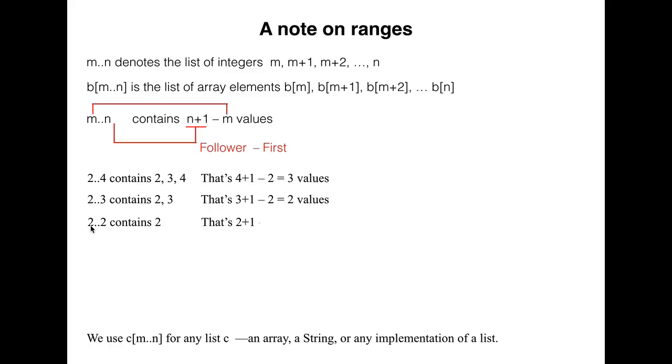2..2 contains 2. That's 2 plus 1 minus 2, which is 1 value. 2..1 contains nothing. That's 1 plus 1 minus 2, or 0 values.